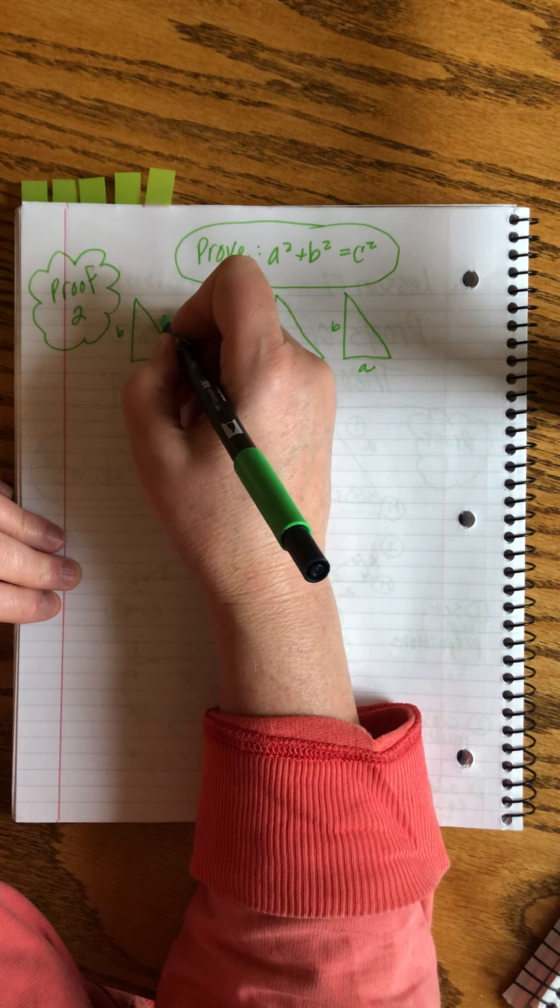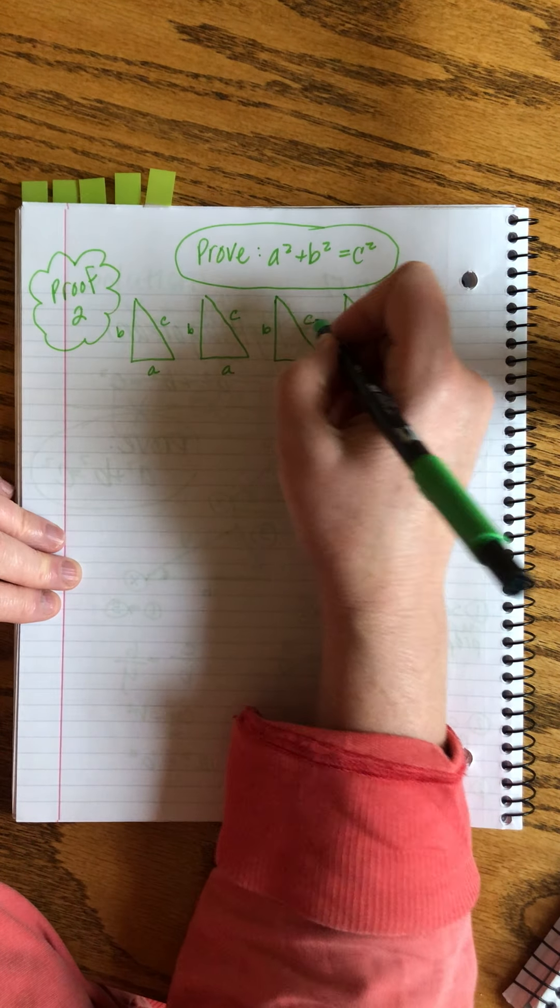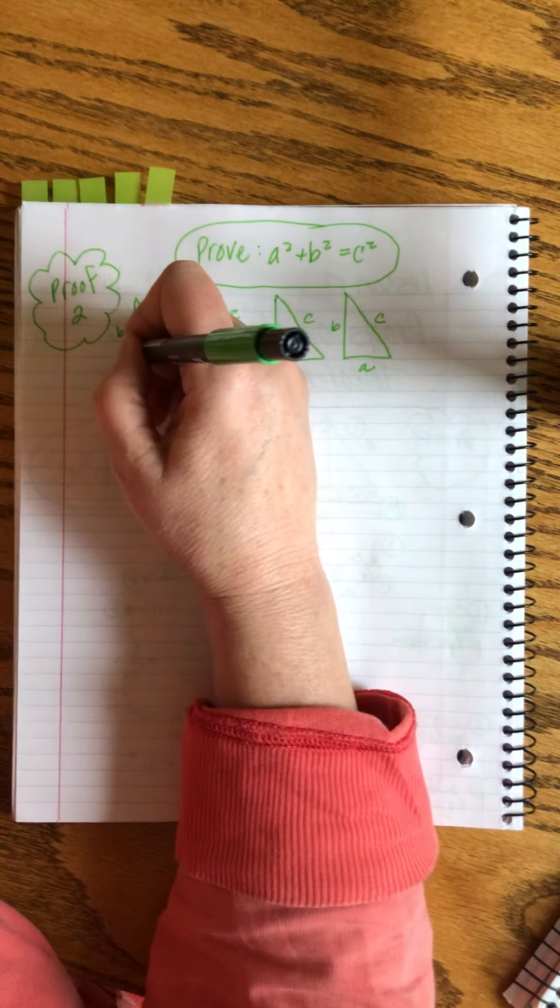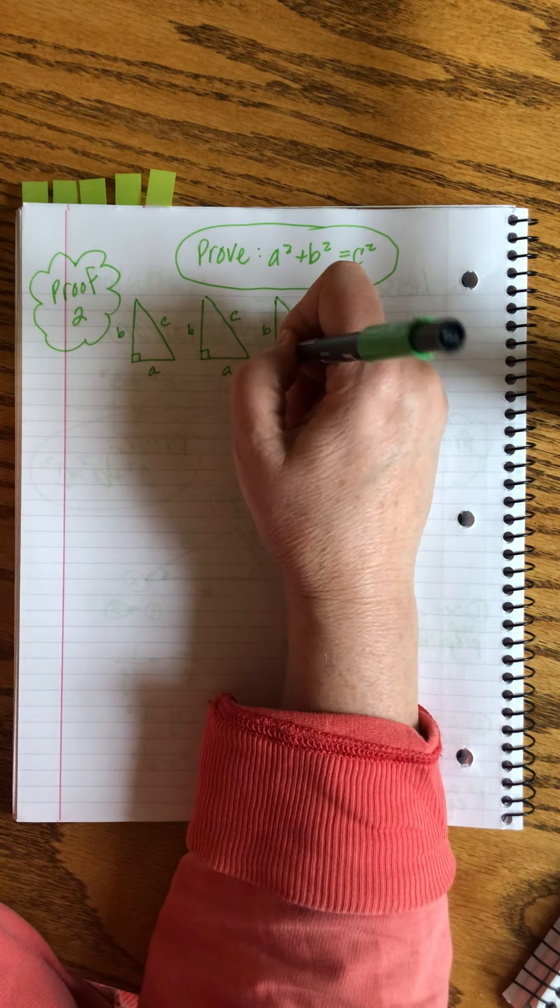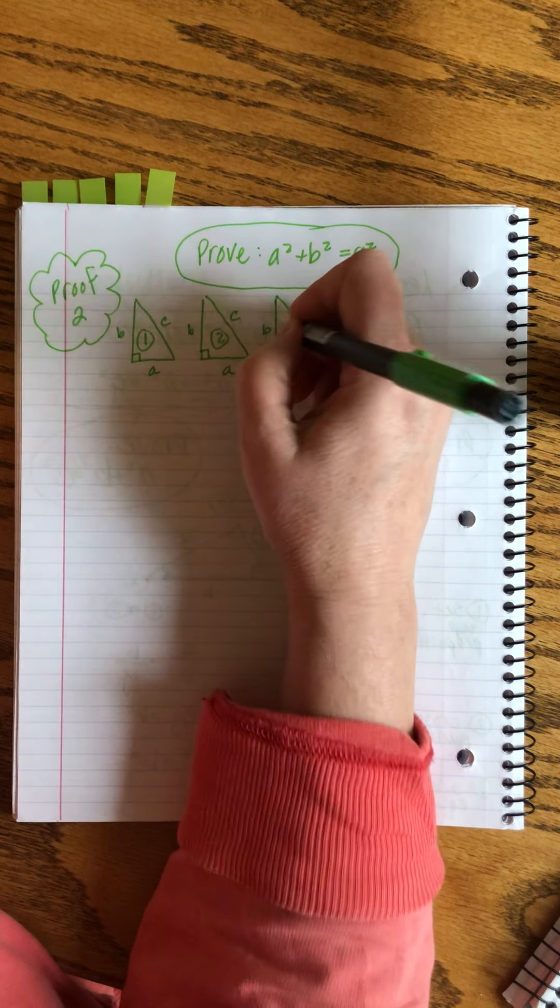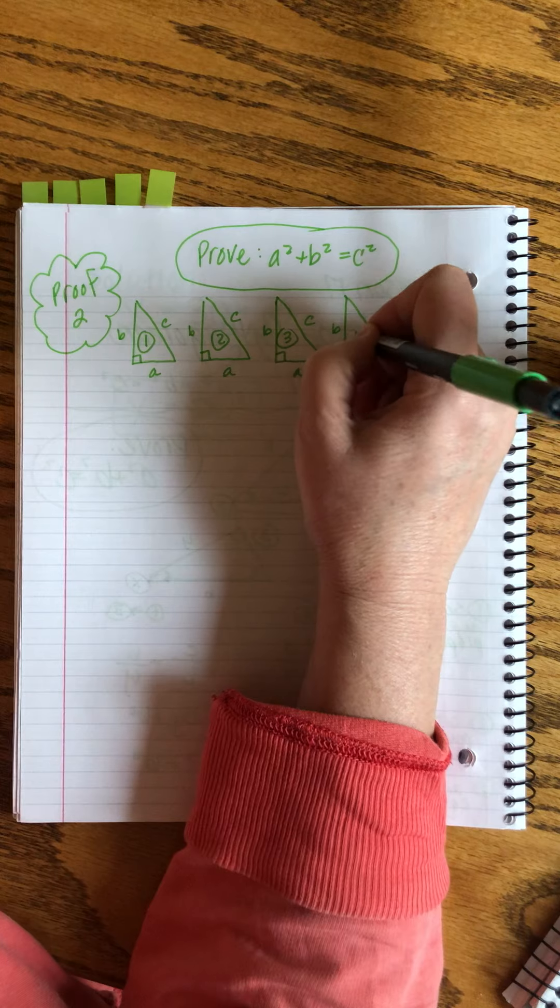And you guessed it, the short-leg, or the hypotenuse, rather, is C. You never would have guessed it, right? Now, I'm going to name, and they all have a right angle. And I'm just going to number them one, two, three, and four.